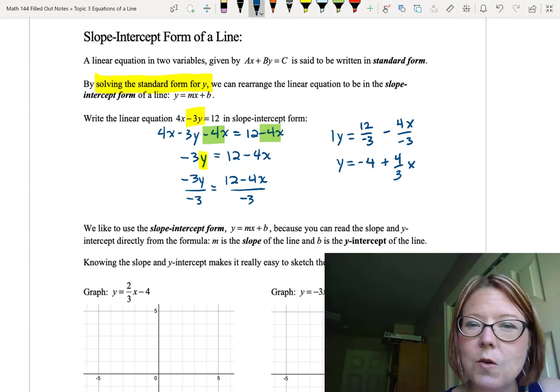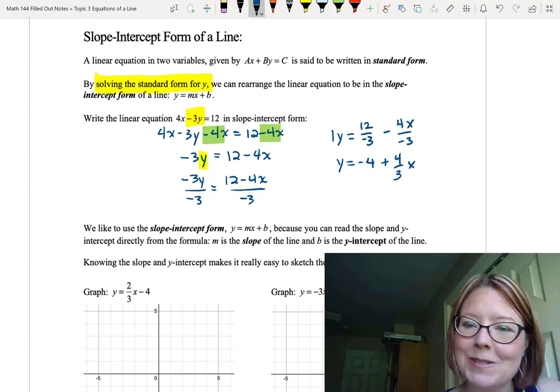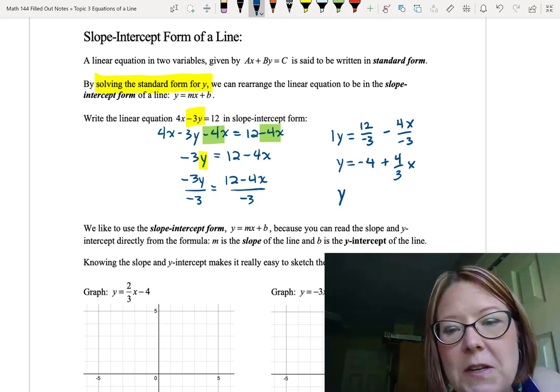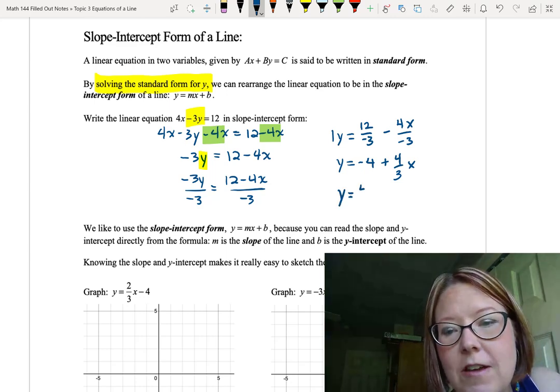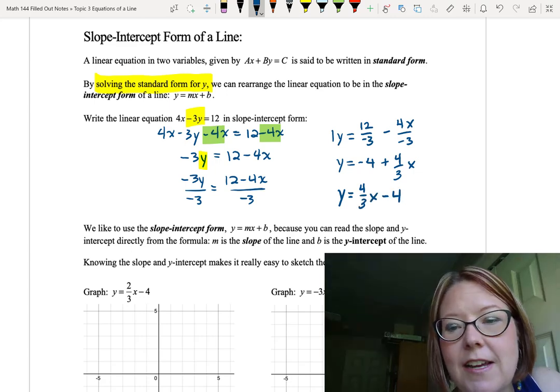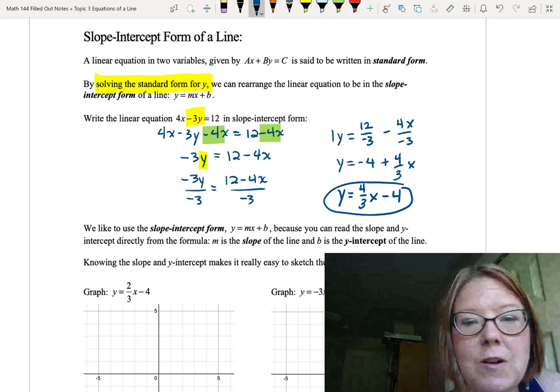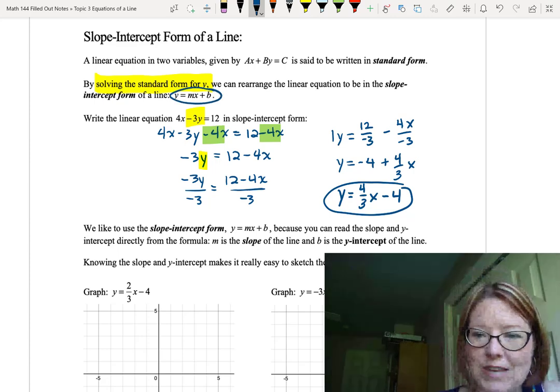This isn't quite in the form y equals mx plus b, because the x term is coming second. But we can rearrange the x term so that we have y equals 4 thirds x minus 4. Now we have it in the same form as y equals mx plus b.